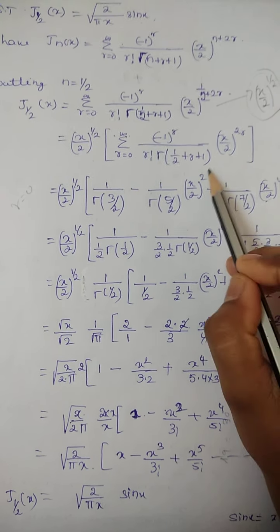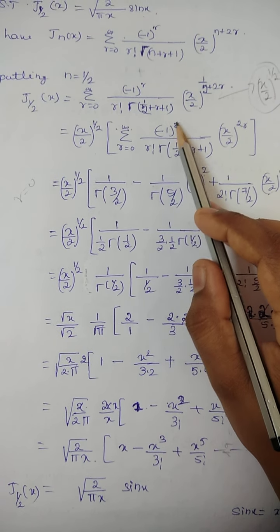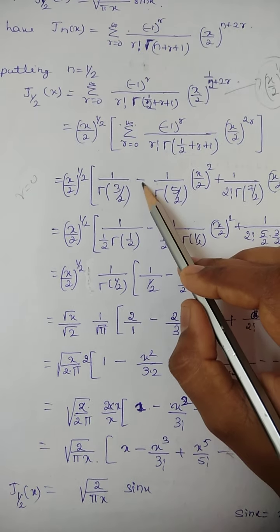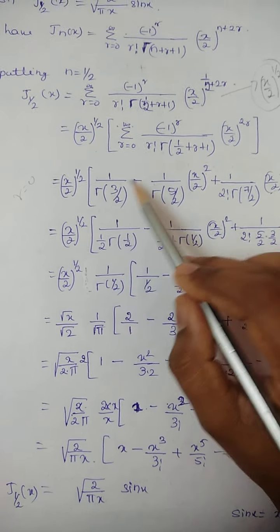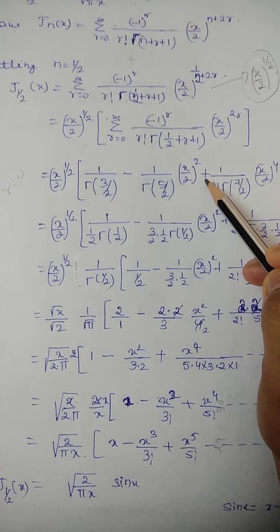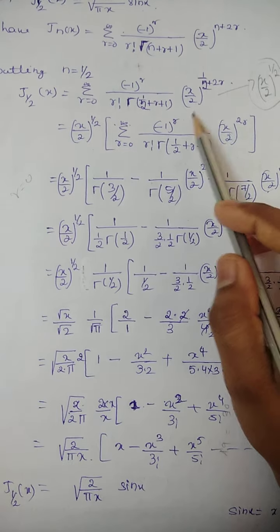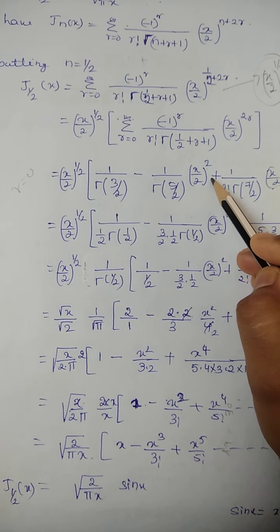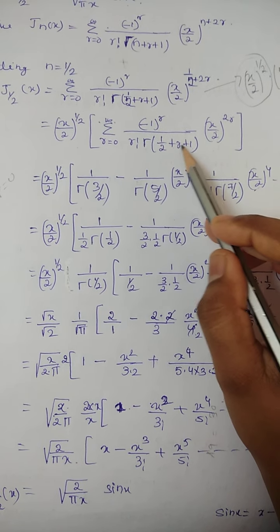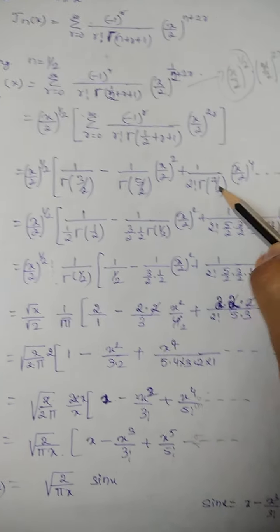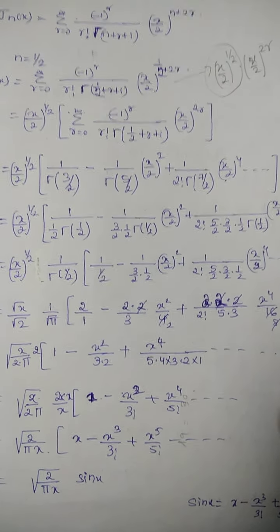So (x/2)^(2·1) = (x/2)^2, and (-1)^1 gives a minus sign. For r = 2: (-1)^2 = +1, r! = 2!, and Γ(1/2 + 2 + 1) = Γ(7/2), with (x/2)^4, and so on with alternating signs.